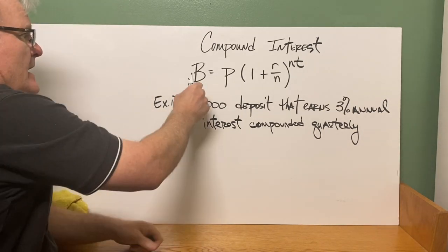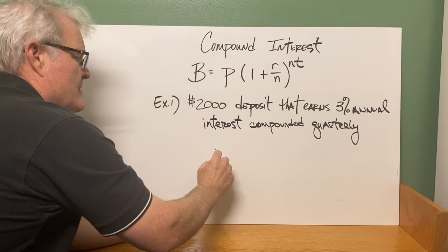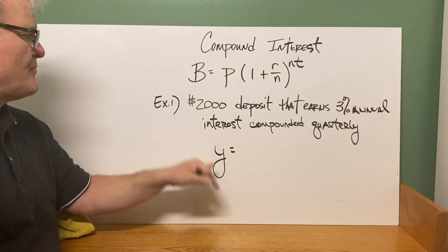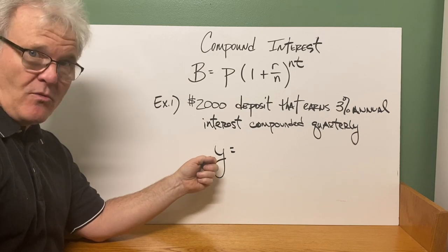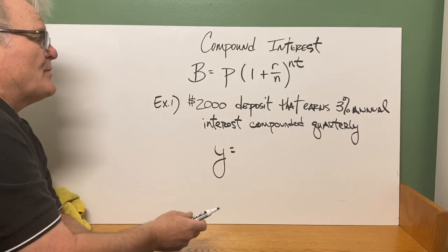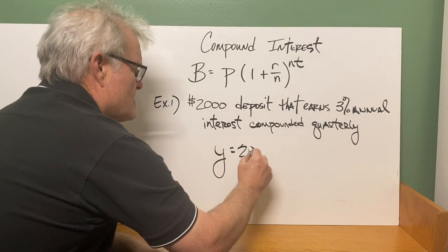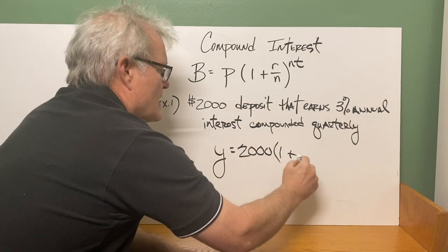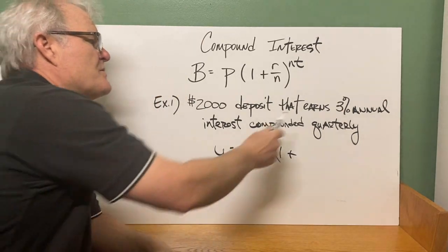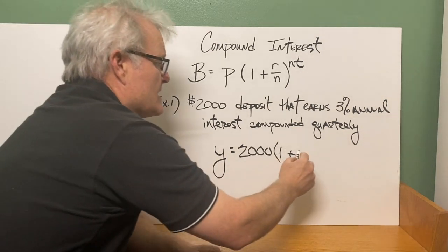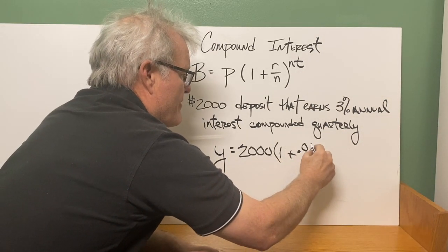So for this one, instead of B for balance, they're just going to use Y for output. So I don't want you to get confused with that in the book. So the Chromebook assignment, this will be a Y here for balance. The output equals, the principal is $2,000. That's how much we invested. Times one plus, our interest rate on this one was 3%. 3%.